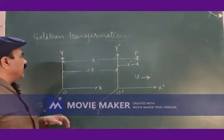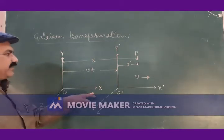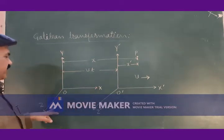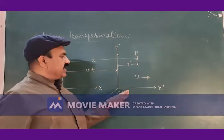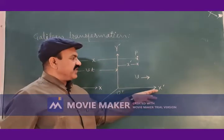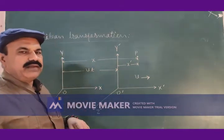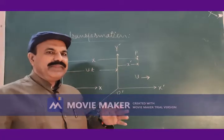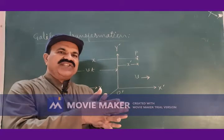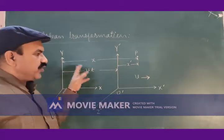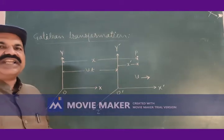Let us come to this figure. This is a frame of reference represented by coordinate axis x, y, z with origin O. At the beginning, let us suppose that these two coordinate systems are coinciding. That is, O and O' are coinciding with each other.